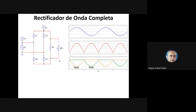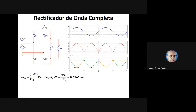La diferencia entre la configuración de puente y la de punto medio: en la tensión inversa de cada diodo, con el puente la tensión inversa de cada diodo es la tensión de pico de la señal de excitación. En cambio, con el punto medio tenemos dos veces la tensión de pico, entonces los diodos deben soportar el doble de tensión inversa de pico. Por eso elegimos la configuración de puente: soporta la mitad de tensión inversa en cada diodo.